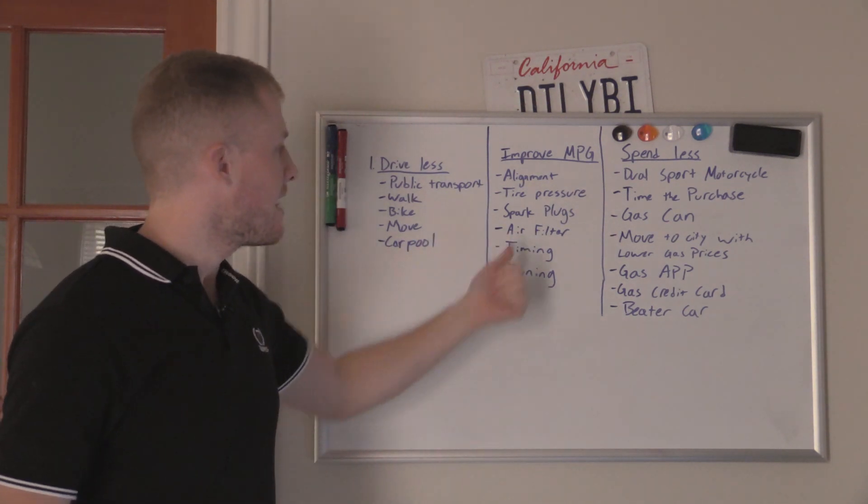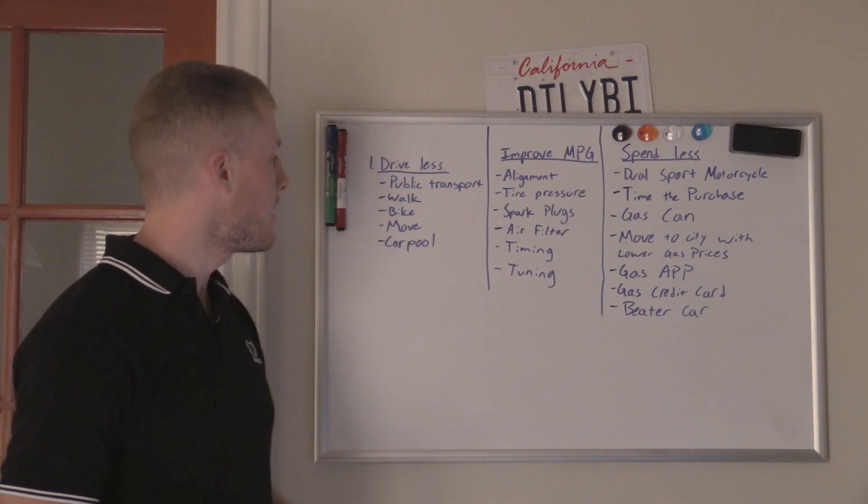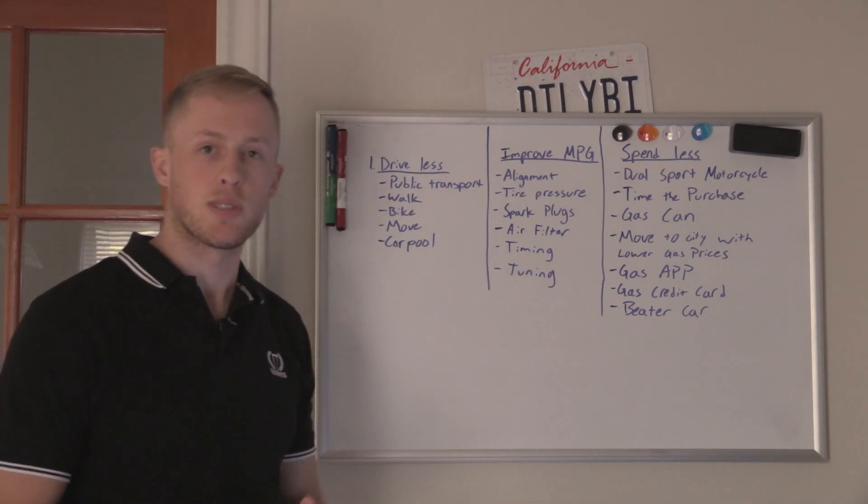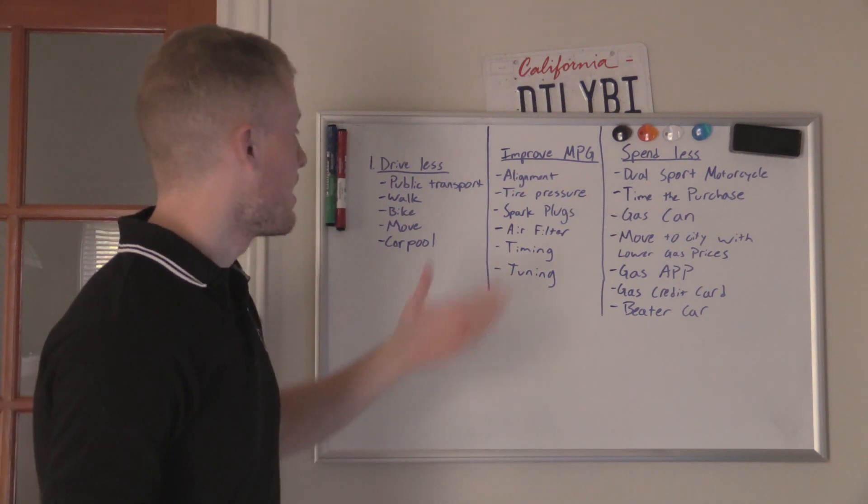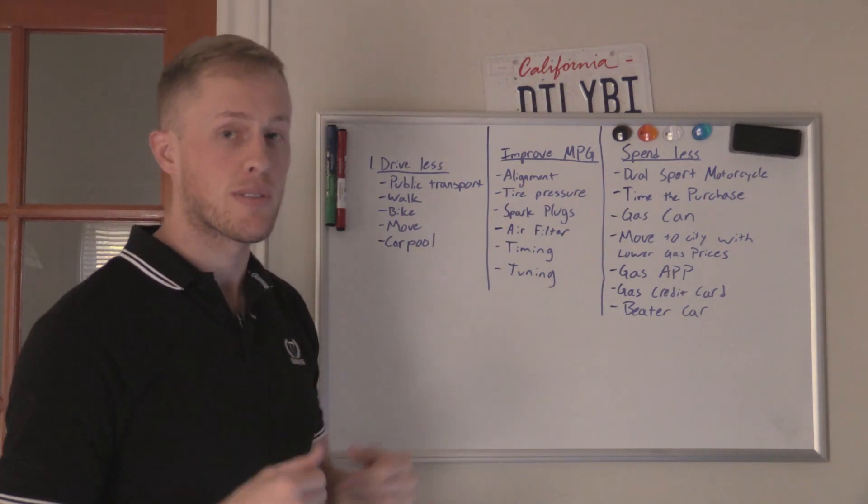So let's go through these real quick. The spark plugs on the S2000 made the biggest difference in my fuel economy, followed by tuning. Now, some cars are different. Some cars respond to different things differently. Alignment, if your alignment's way off and you're dragging your tires down the road, that's going to make a huge difference in fuel economy.